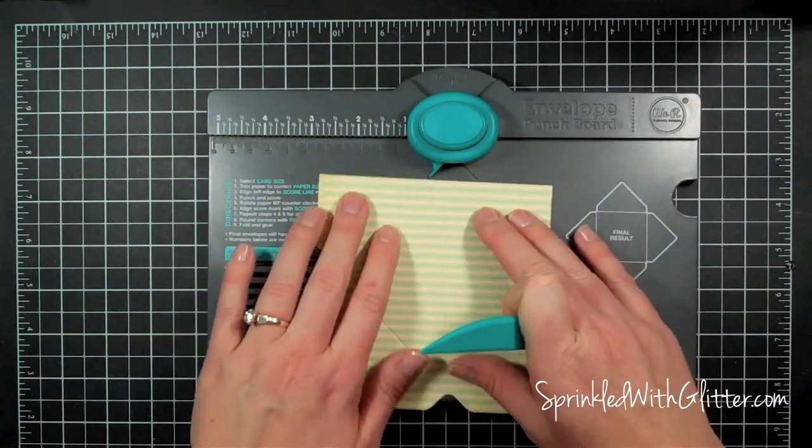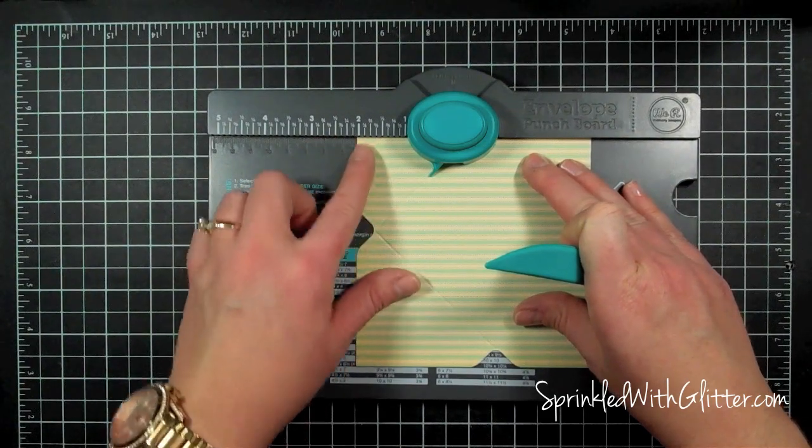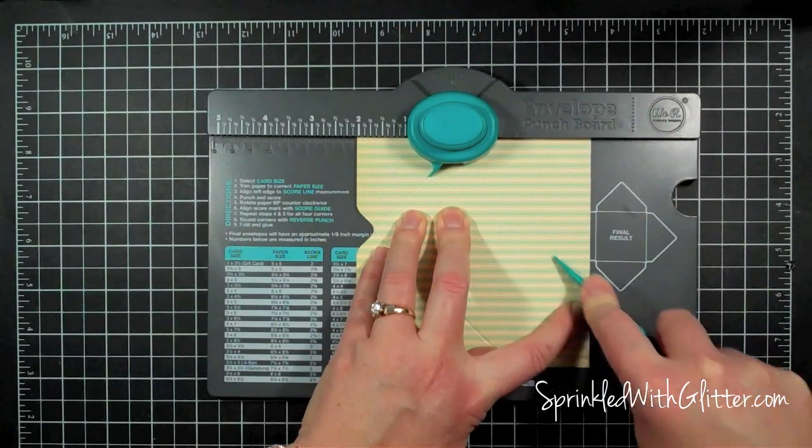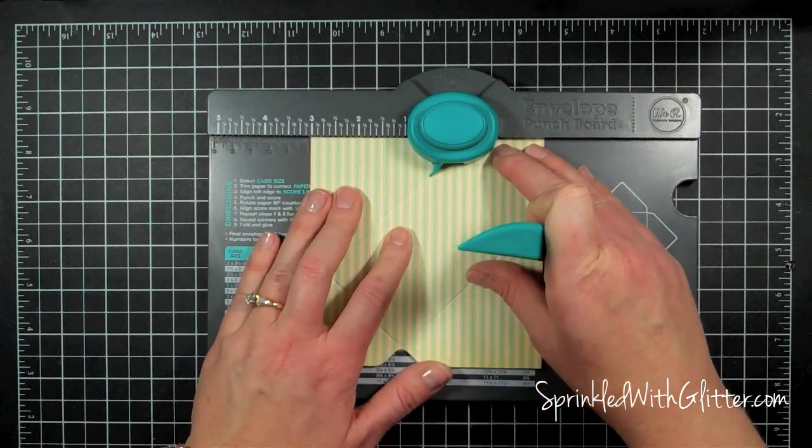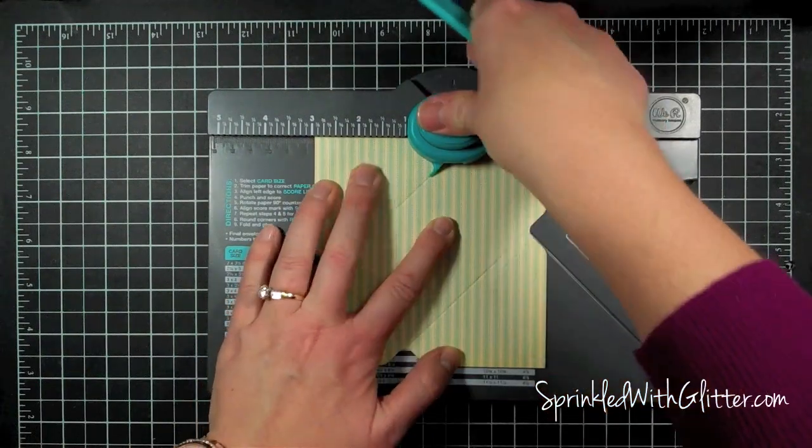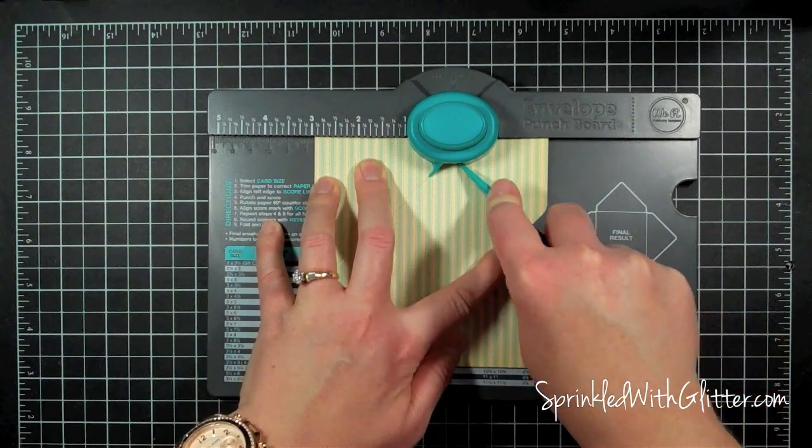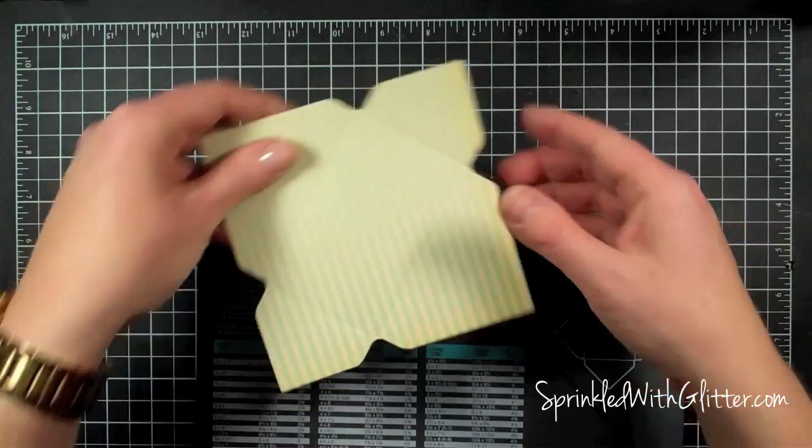And then I will do that again, lining it up with the score line or the marker, not the measurement. And I'm going to punch and score. And one more turn, lining it up with the score line, punch and score. So I have all of my scoring done for the envelope.